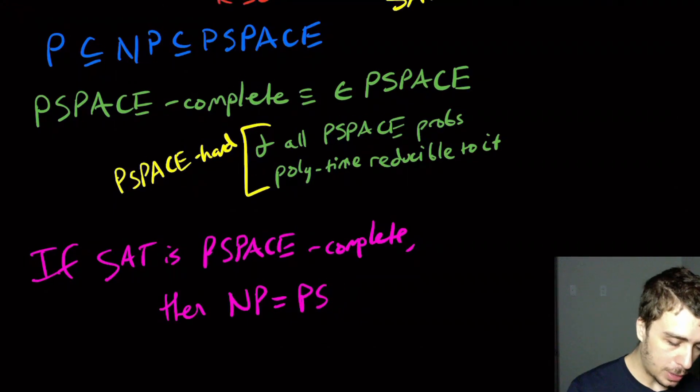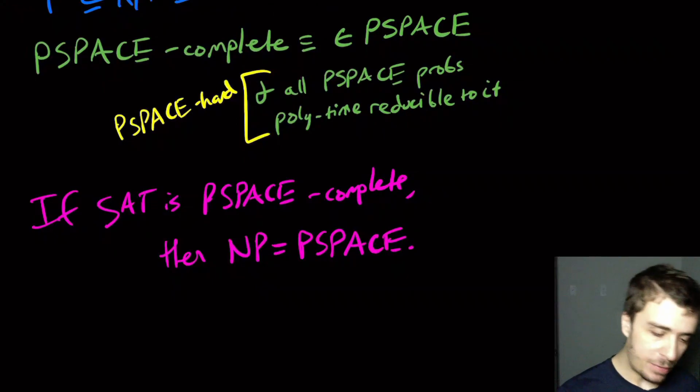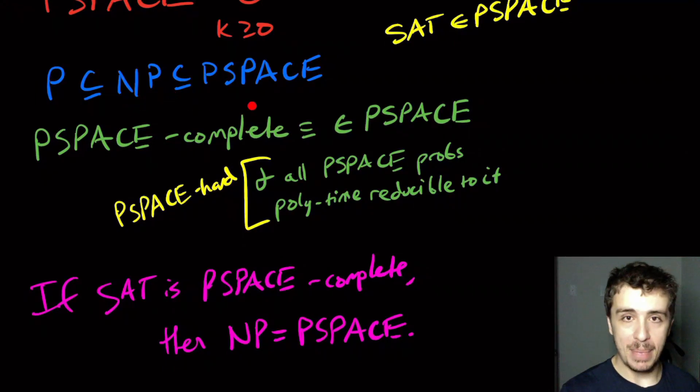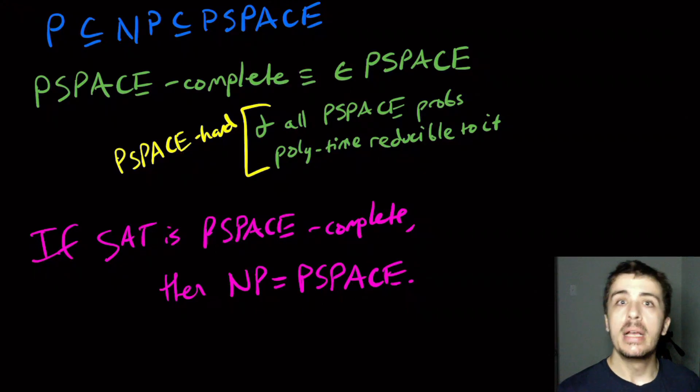This pretty much comes directly from the definitions here. If it's PSPACE-complete, it already is in PSPACE because it's in NP, and therefore, since it's a subset, it is in PSPACE also. So if we know in advance that it's PSPACE-hard, then that means every PSPACE problem can poly-time reduce to SAT.